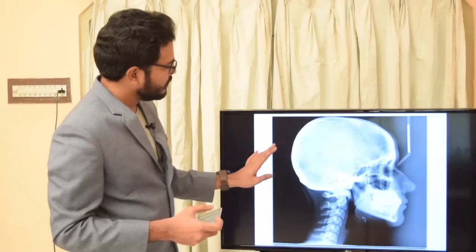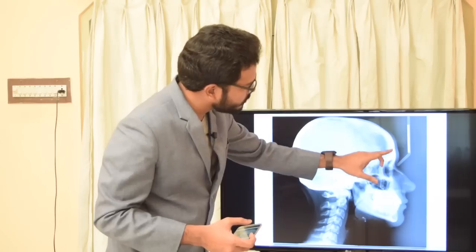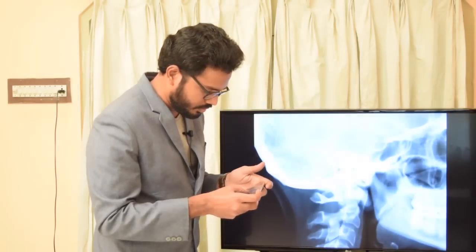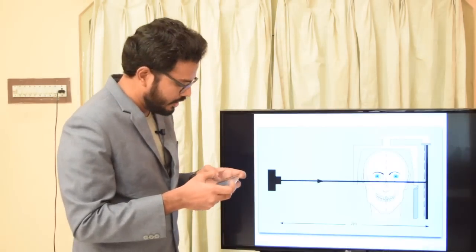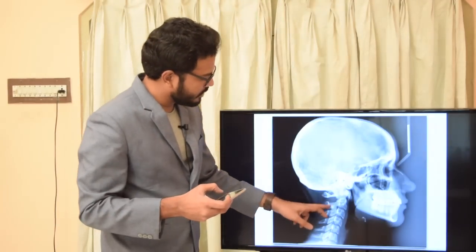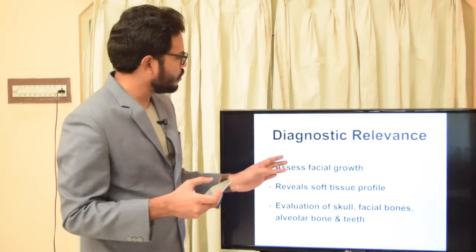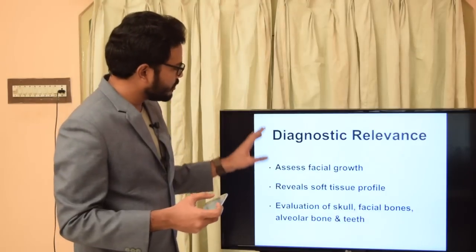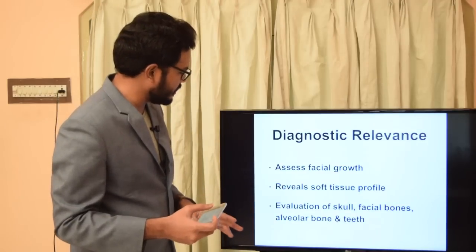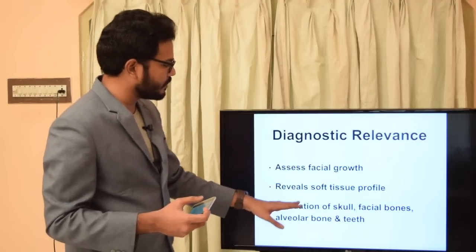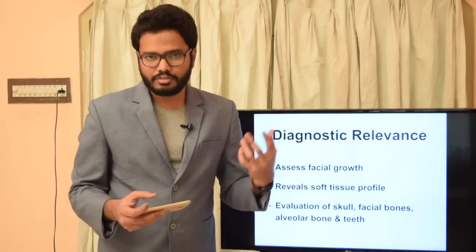This is a lateral ceph where you can clearly see the bones of the skull as well as the face, including a soft tissue profile. You can notice the soft tissue profile evident in this lateral ceph, along with cervical vertebrae, alveolar process of bones, and teeth. The diagnostic relevance is that it's used for assessing facial growth and reveals soft tissue profile.